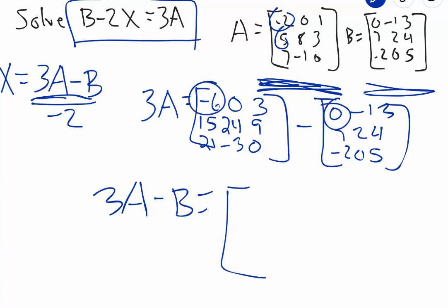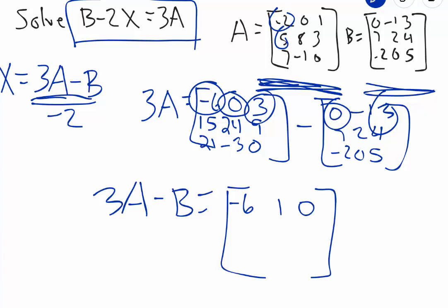Negative 6 minus 0 is negative 6. 0 minus negative 1 is positive 1 — the double negative rule cancels to give positive 1. Then 3 minus 3 is 0. 15 minus 7 is 8. 24 minus 2 is 22. 9 minus 4 is 5. 21 minus negative 2 — double negative rule — makes that 23. Negative 3 minus 0 is negative 3. And 0 minus 5 is negative 5.